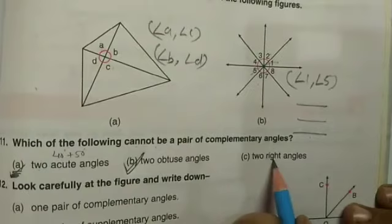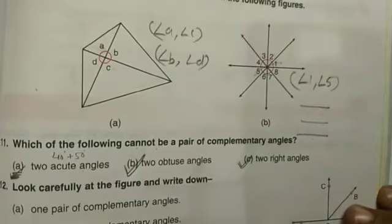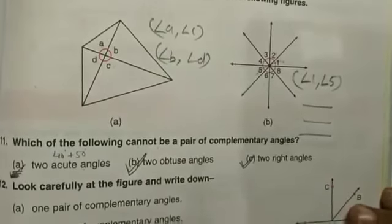If I take two right angles, if one already is 90, the sum will be 180. So again it cannot be a pair of complementary angles.